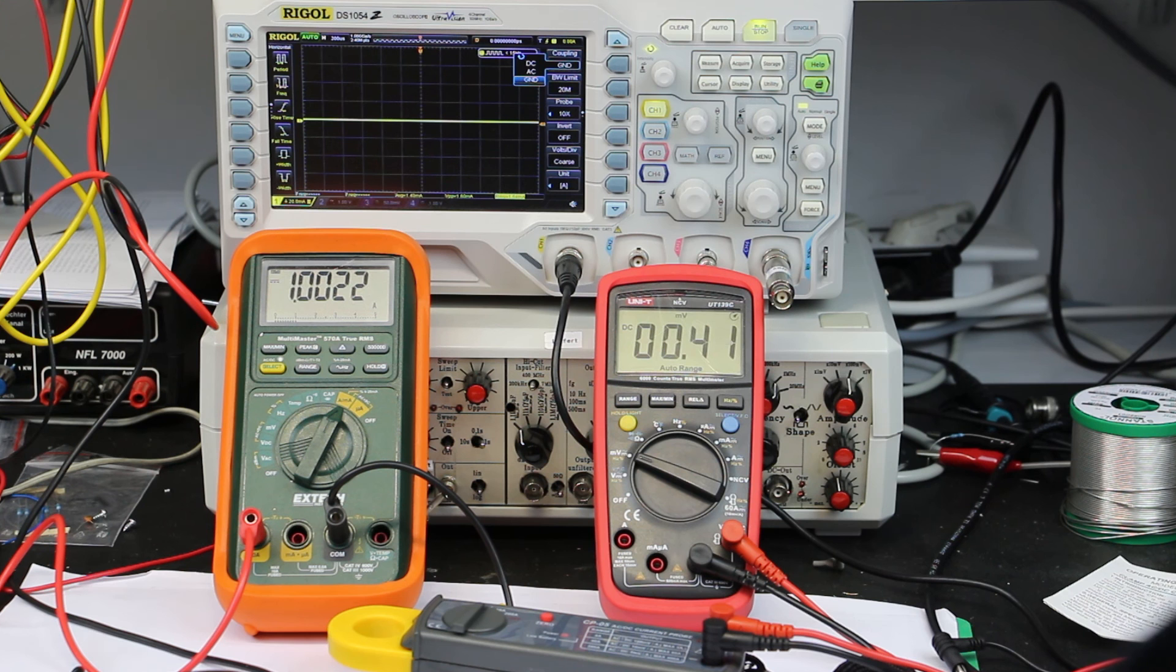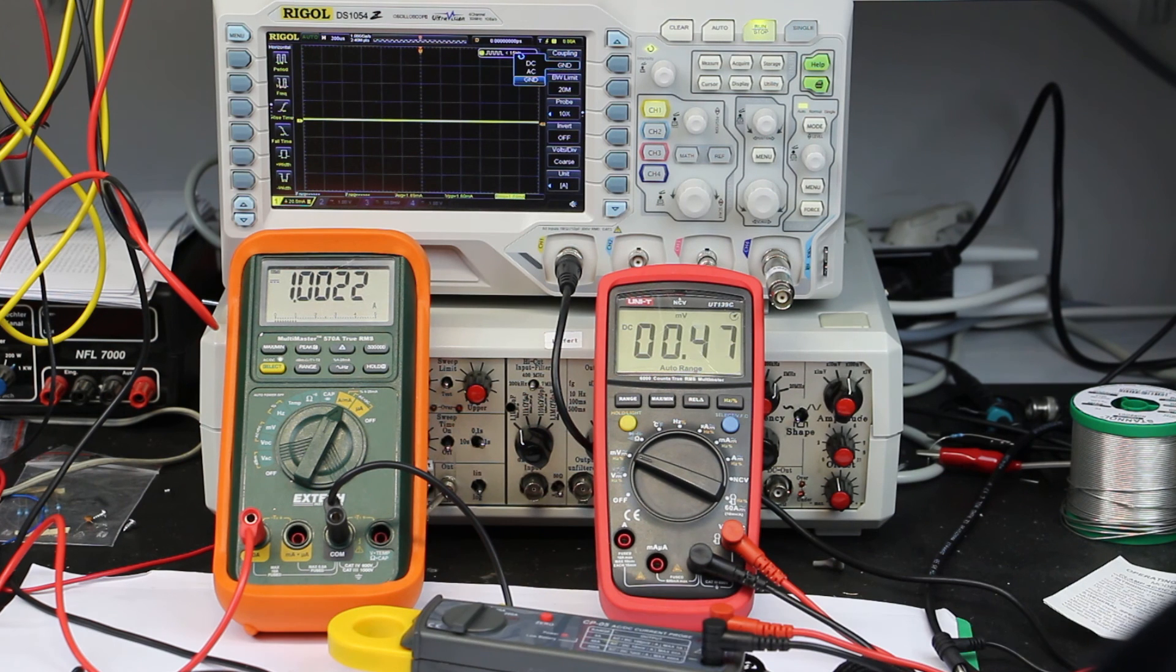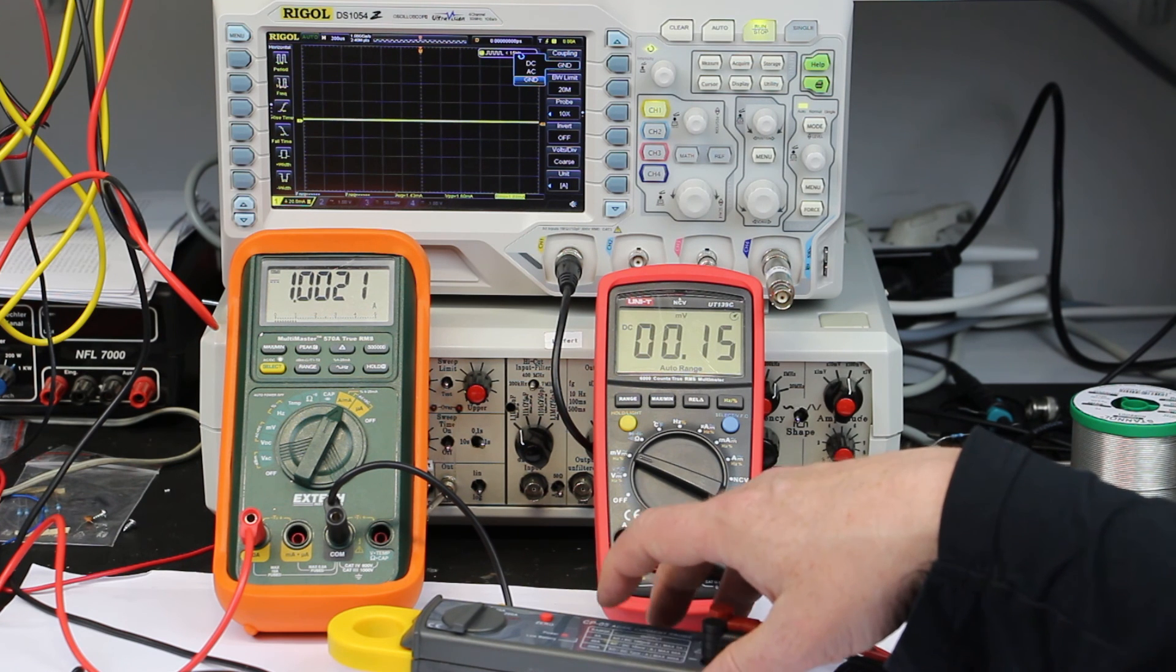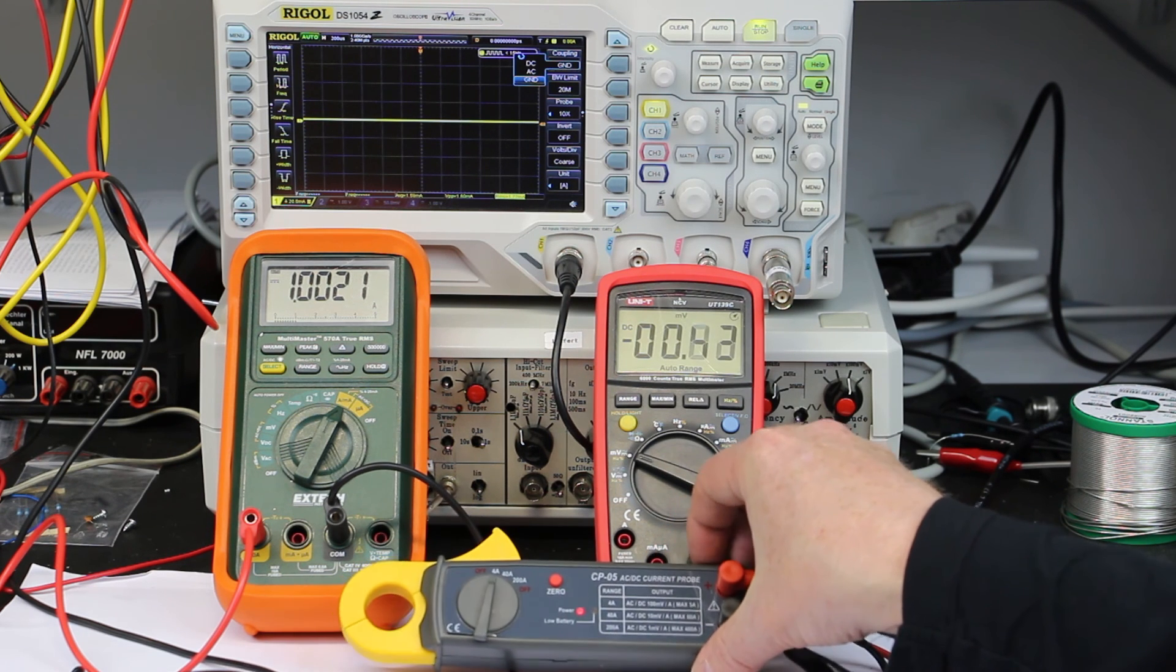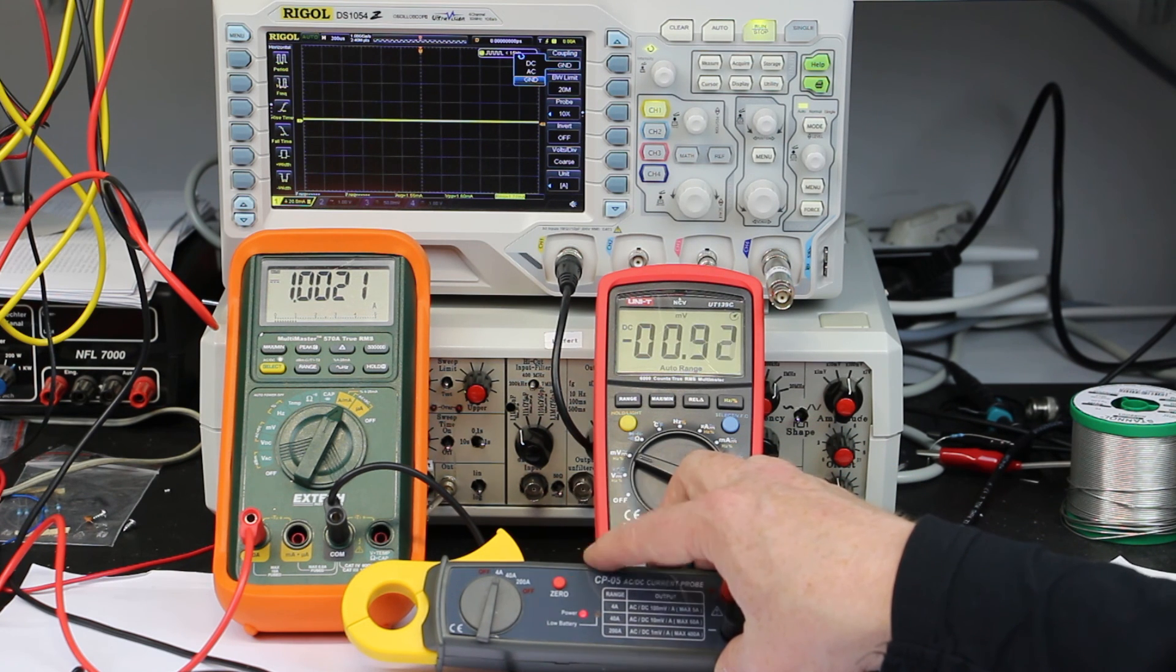But there are two big disadvantages. First of all, you always have to interrupt your circuit, the current path that you want to measure. And second is, you usually can only measure either static DC current or a continuously not changing quickly AC current. Now, a current probe or a clamp meter works totally different. I've explained the principle of AC and DC measurement with these clamp meters in the separate video. The link will be down below in the comments.